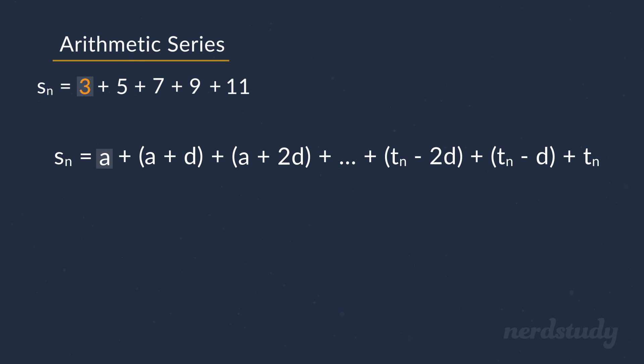As we can see, we have our a as the first term, which in this example would be 3. Then we have the addition of a and the difference, the difference being 2 in this case, giving us the 5 that we see here. Then a plus 2 times the difference, which would be 3 plus 2 times 2, giving us the 7 here. And so on and so forth,